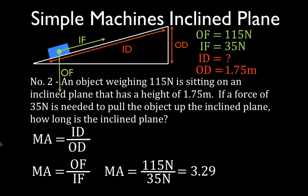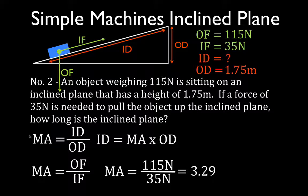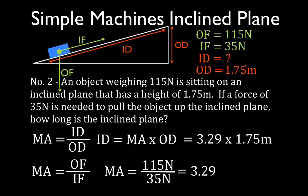Now we know the mechanical advantage and the output distance, so we can solve for the input distance. The input distance — the length of the ramp — equals the mechanical advantage times the output distance, after a little cross-multiplying. Plugging our values in: the mechanical advantage is 3.29 and the output distance (the height) is 1.75 meters. That tells us this inclined plane is 5.76 meters long.